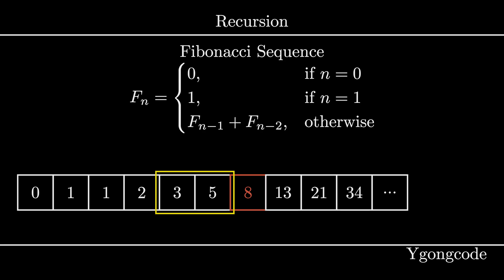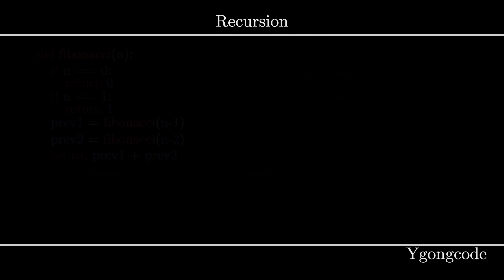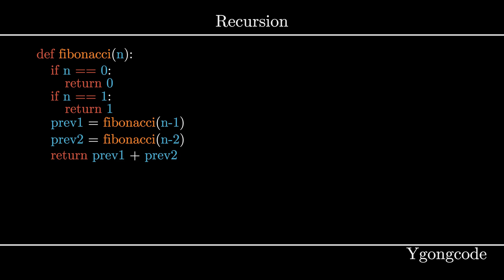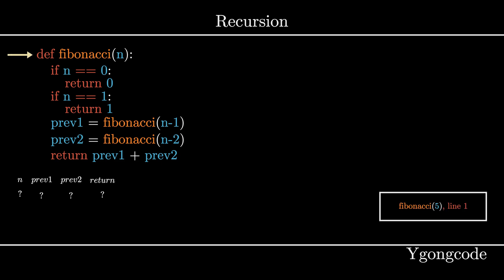Here is the recurrence relation for the Fibonacci sequence. As you can see, it contains two base cases and a recursive definition. Understanding recurrence takes practice and time, so we will mainly focus on the mechanics of recursion. Here's the code for finding the nth number of a Fibonacci sequence, with line numbers and variables included to help you follow along the visualization. You should also notice that it has a similar structure to the recurrence relation shown earlier.